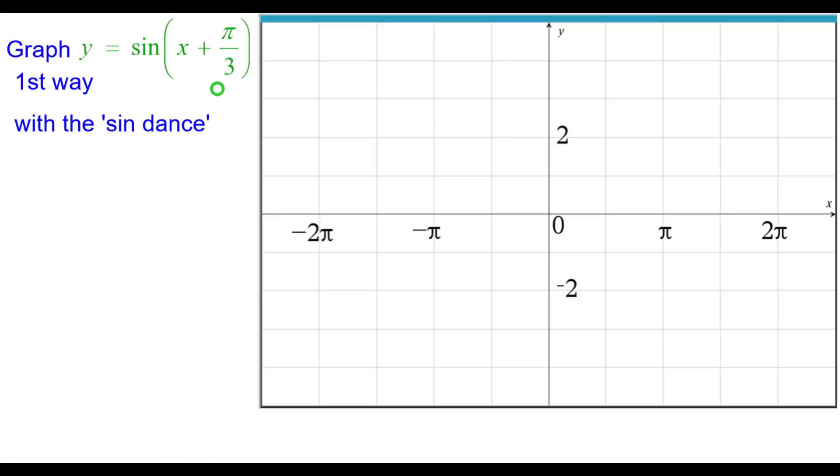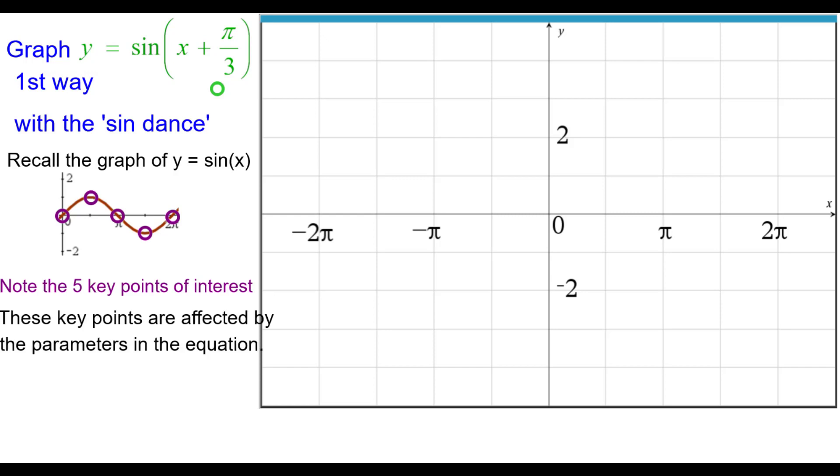Graph y equals the sine of the quantity x plus pi over 3. The first way is with what we call the sine dance. We need to recall what the graph of the sine function looks like and the five key points of interest. These key points and all the points are affected by the parameters in the equation and the only one is a plus pi over 3 inside the argument.